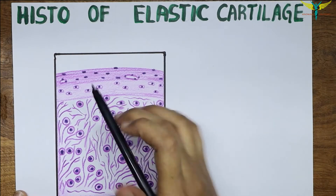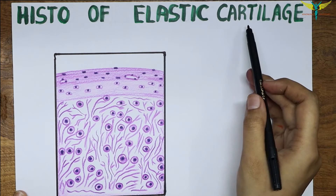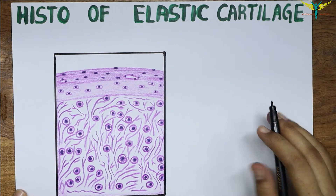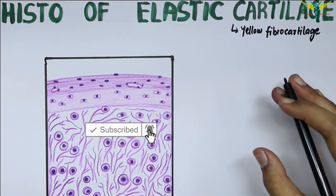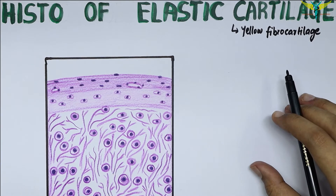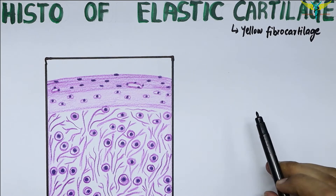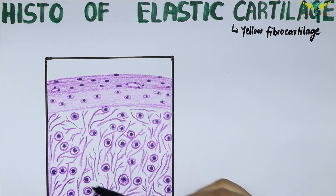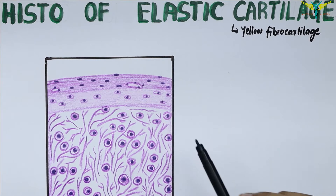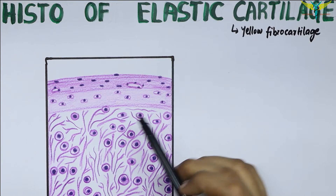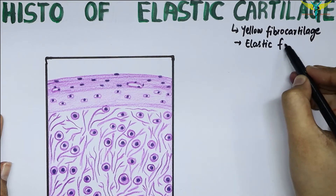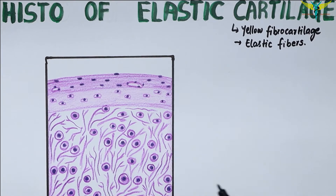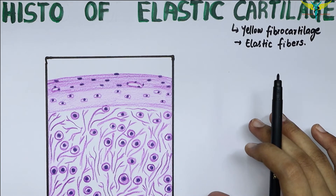In this video, let's learn about the histology of the elastic cartilage. The elastic cartilage is also called yellow fiber cartilage. The main difference between the hyaline cartilage and the elastic cartilage is that instead of collagen fibers, the matrix of elastic cartilage contains numerous elastic fibers that form a network.